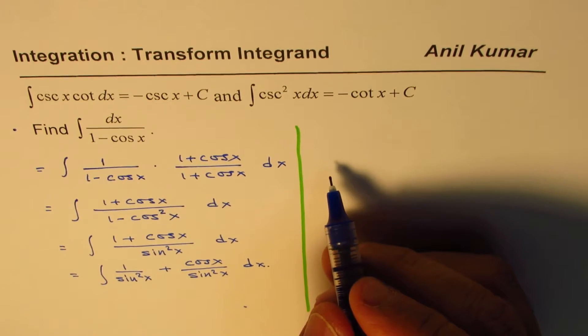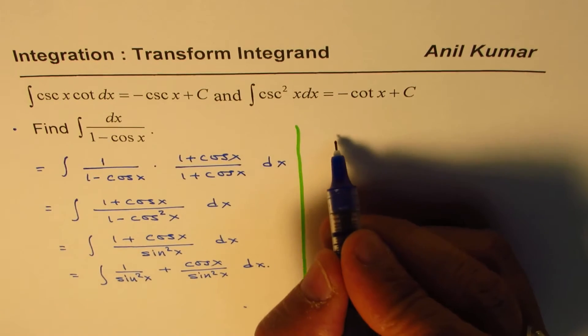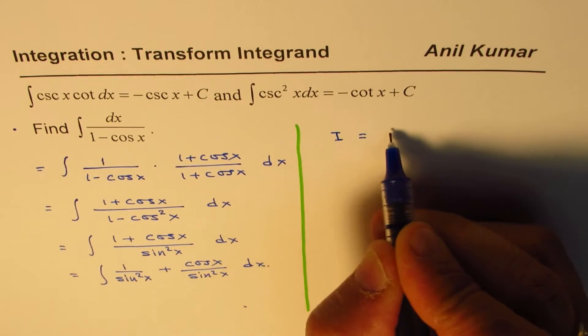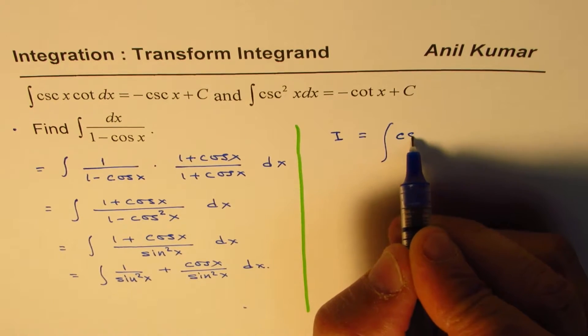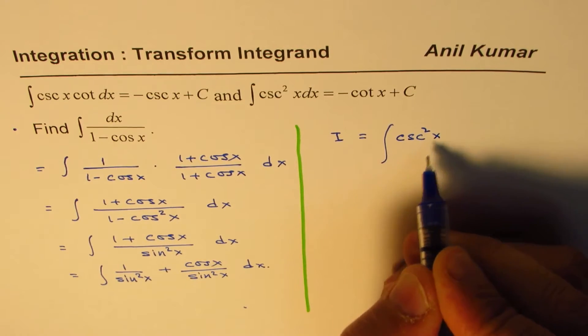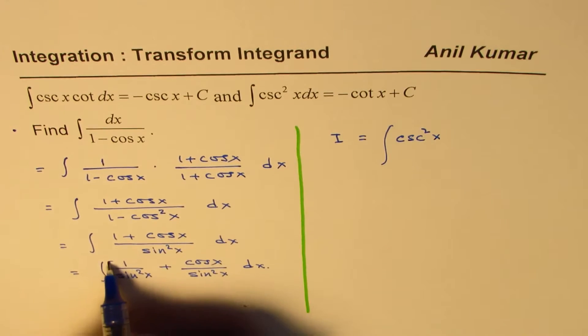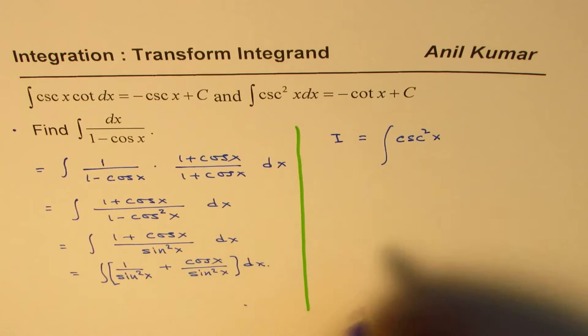So 1 over sine square x is, so we are finding the integral for 1 over sine square x, which is cosecant square x, cosecant square x, let me write brackets here since I didn't write dx.